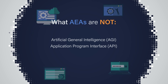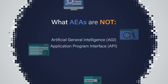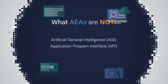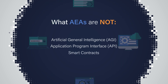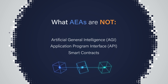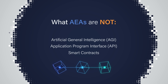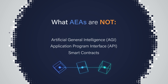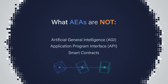An application program interface, which has no agency and is not a separate economic entity. Neither are AEAs smart contracts. Smart contracts allow for credible transactions without third parties on blockchains. Like APIs, smart contracts require user input in the form of transactions, and therefore are not autonomous agents.